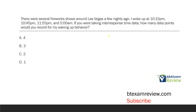There are several fireworks shows around Las Vegas a few nights ago. I woke up at 10:15 p.m., 10:45 p.m., 11:55 p.m., and 5 a.m. If you were taking inter-response time data, how many data points would you record for my waking up behavior? Inter-response time is the time in between two behaviors. You have to figure out what behavior you are measuring — in this case, waking up. Latency would be the SD to the first response; the SD is a firework, the first response is waking up at 10:15 p.m. Then we measure inter-response time from the end of the first response to the start of the second, the end of the second to the start of the third, and the end of the third to the start of the fourth. That gives us one, two, and three data points.